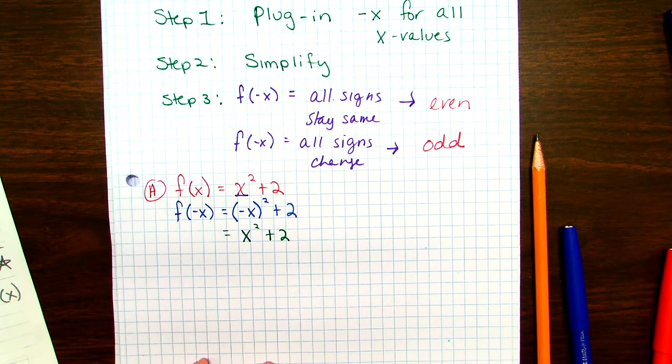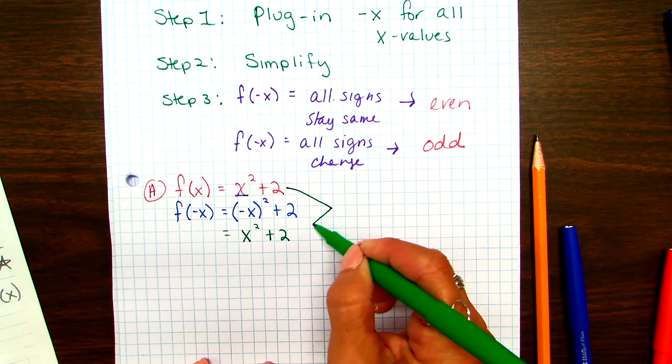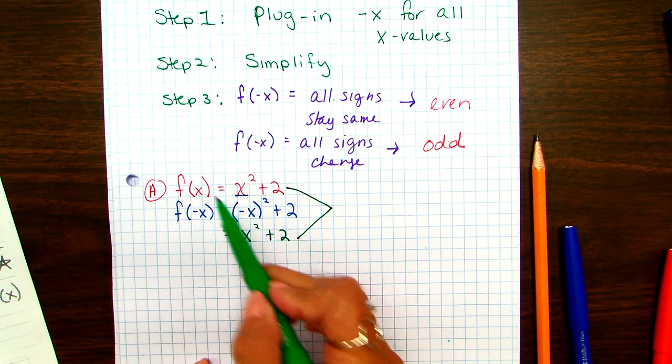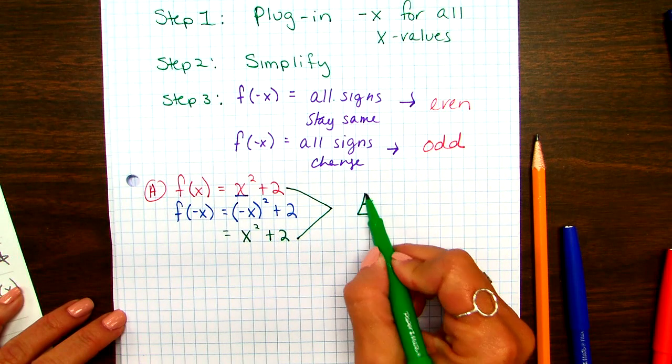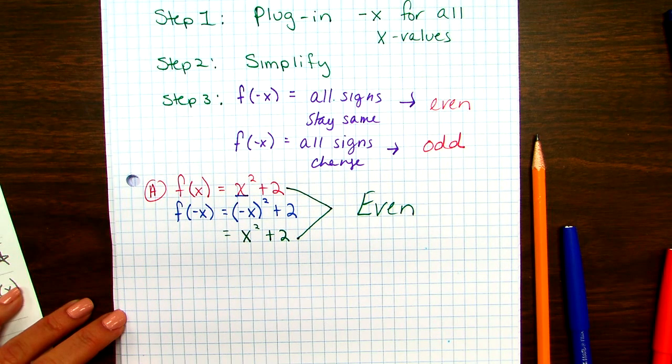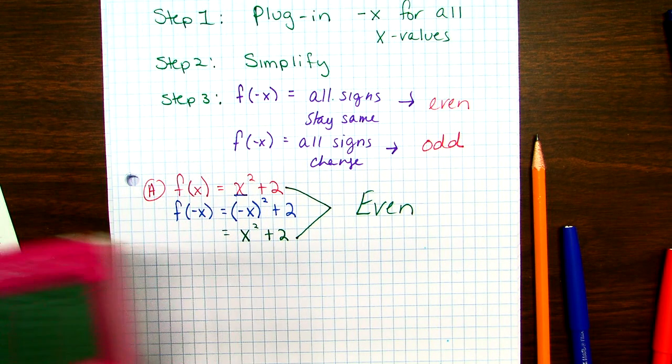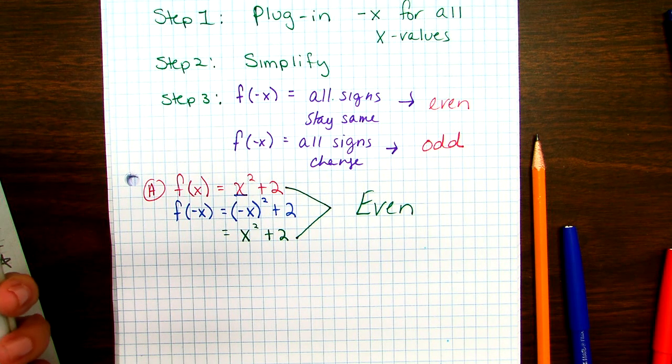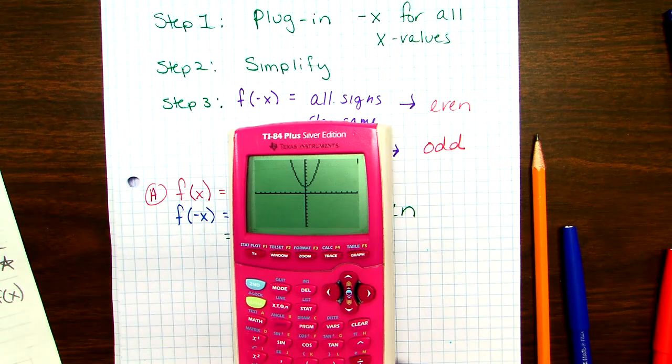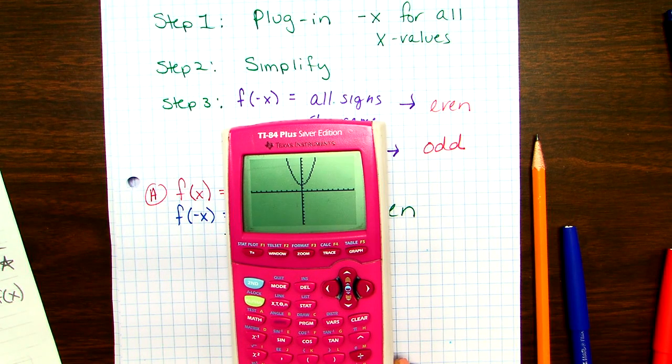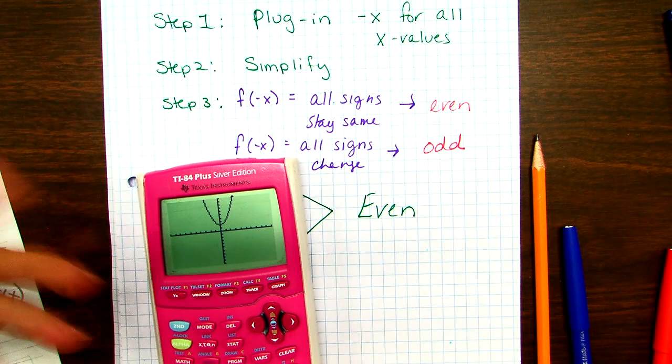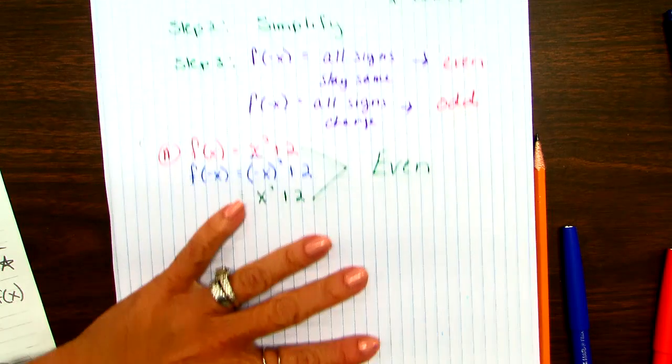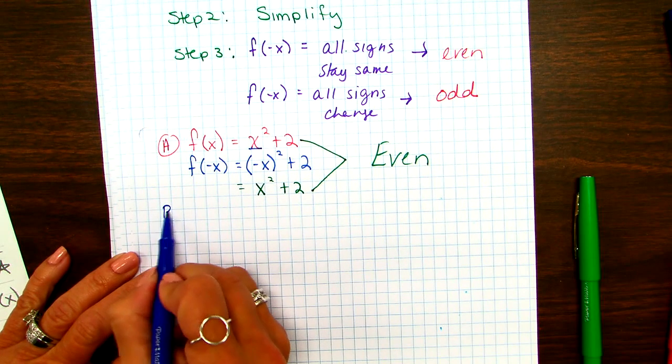So now we look. Step three. Look at the original and look at the one we have now. What happened? Did all signs stay the same or did all signs change or neither? Same. So when all signs stay the same, that means it's even. And I'll prove it to you. Let me just show you what this looks like as a graph. X squared plus 2. That's an even function. Right? The Y axis splits it to equal parts.